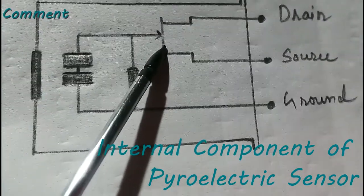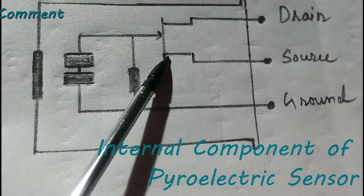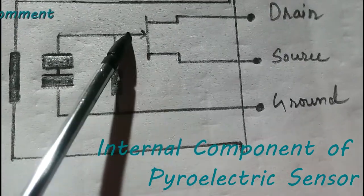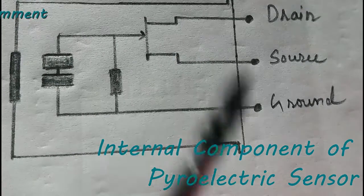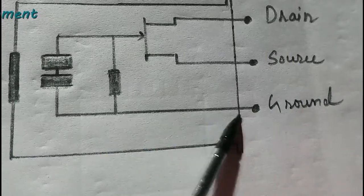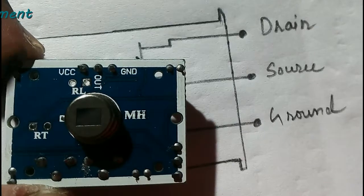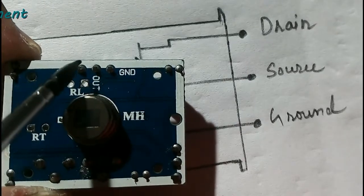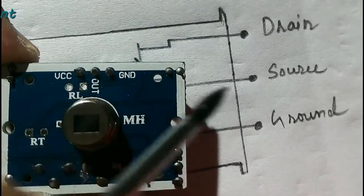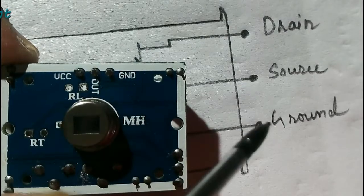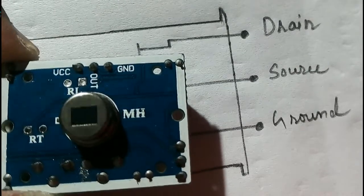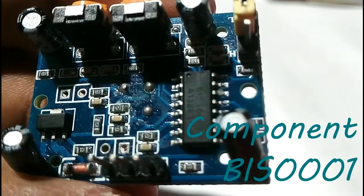The generated voltage comes to the N-channel JFET transistor. JFET stands for junction field effect transistor. It has three terminals: gate, drain, and source. The other terminal of the pyroelectric sensor is ground. As you can see, the PIR sensor module has three terminals: VCC, OUT, and GND. VCC is the drain, OUT is the source, and GND is the ground which comes out from the pyroelectric sensor.